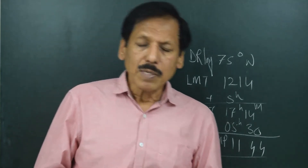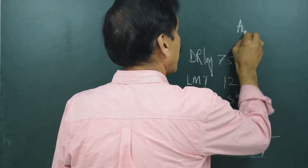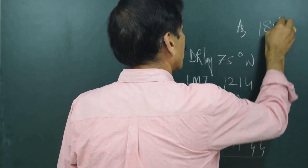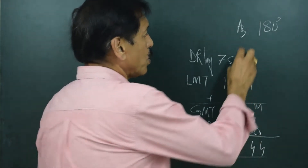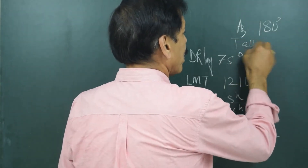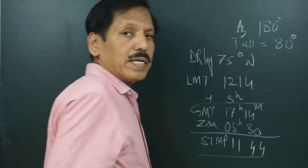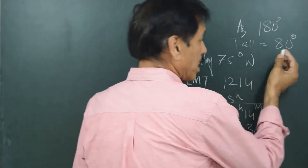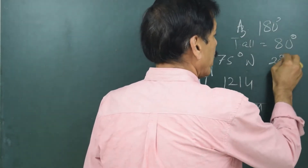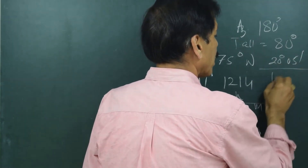Hello, this is Kevin Chaudhary. Sometimes there might be a tricky question. Azimuth at the time of meridian passage was 180. The true altitude was 80 degrees and the declination of the sun at the time of meridian passage was 20 degrees 05 minutes. Find the latitude.